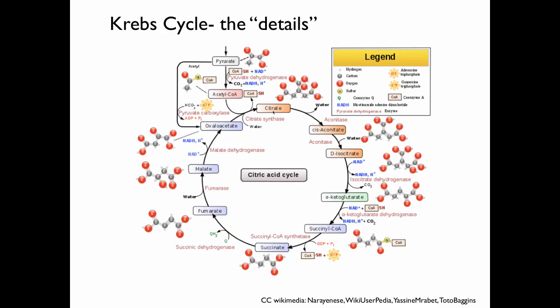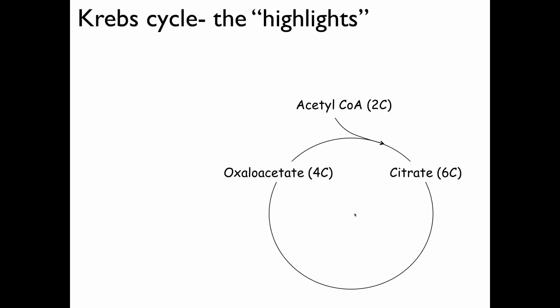After that, citrate can then move into a series of different steps to form different substrates and products, and in the end, oxaloacetate is reformed. So this four-carbon molecule is reformed in the last step of the Krebs cycle. That means two carbons are lost as carbon dioxide. In the process of acetyl-CoA being oxidized, we have the reduction of NAD to form NADH. Furthermore, ATP is also formed. So let's take you through the highlights of the Krebs cycle.